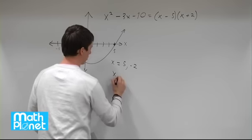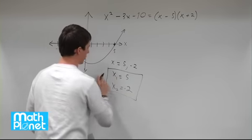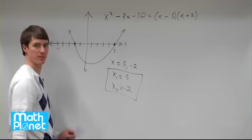So we can also write that as x₁ equals 5 and x₂ equals negative 2 just to be clear. So those are our two answers graphically and from factorizing.